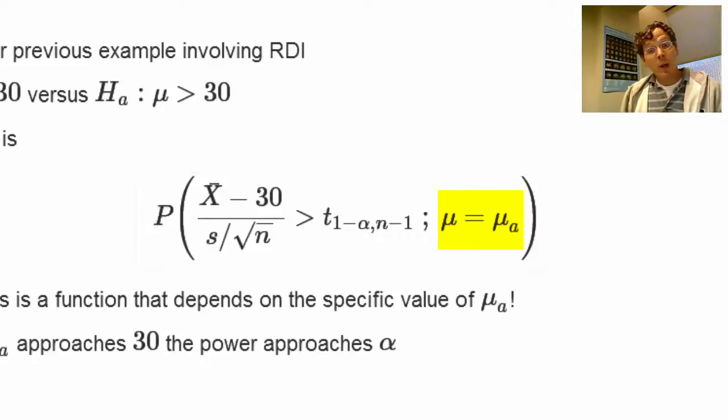That winds up being our power. Now, imagine if I were to plug in a mu_A of, say, 60, then this will be a large number. And that makes sense, right? Because, if we want to detect whether or not the mean for this population is 30 or not, and it's really 60, then we should have a lot of power to detect that, because when we collect our data, there will be values around 60 instead of values around 30.